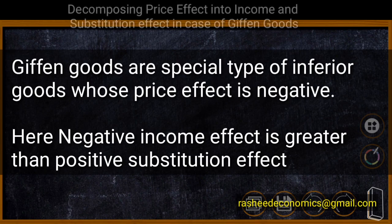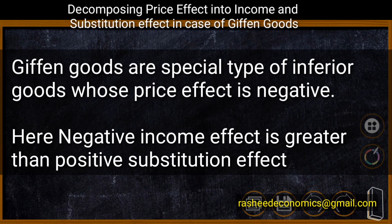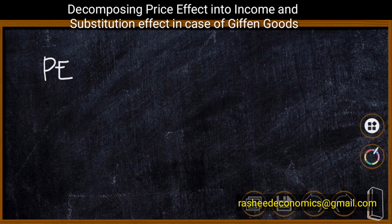We know that Giffen goods are a special type of inferior goods whose income effect is negative, and this negative income effect is greater than the positive substitution effect. Therefore the price effect will also be negative. Giffen goods are goods whose price effect is negative because of the higher intensity of negative income effect than positive substitution effect.